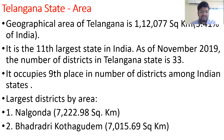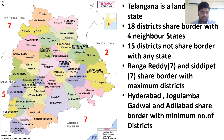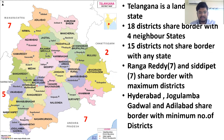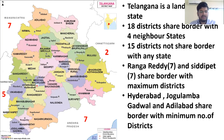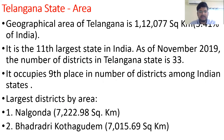The largest districts in Telangana by area are Nalgonda and Bhadradri Kothagudem. The smallest districts are Hyderabad, Medchal, and Warangal Urban — Hyderabad has an area of just 192 square kilometers.